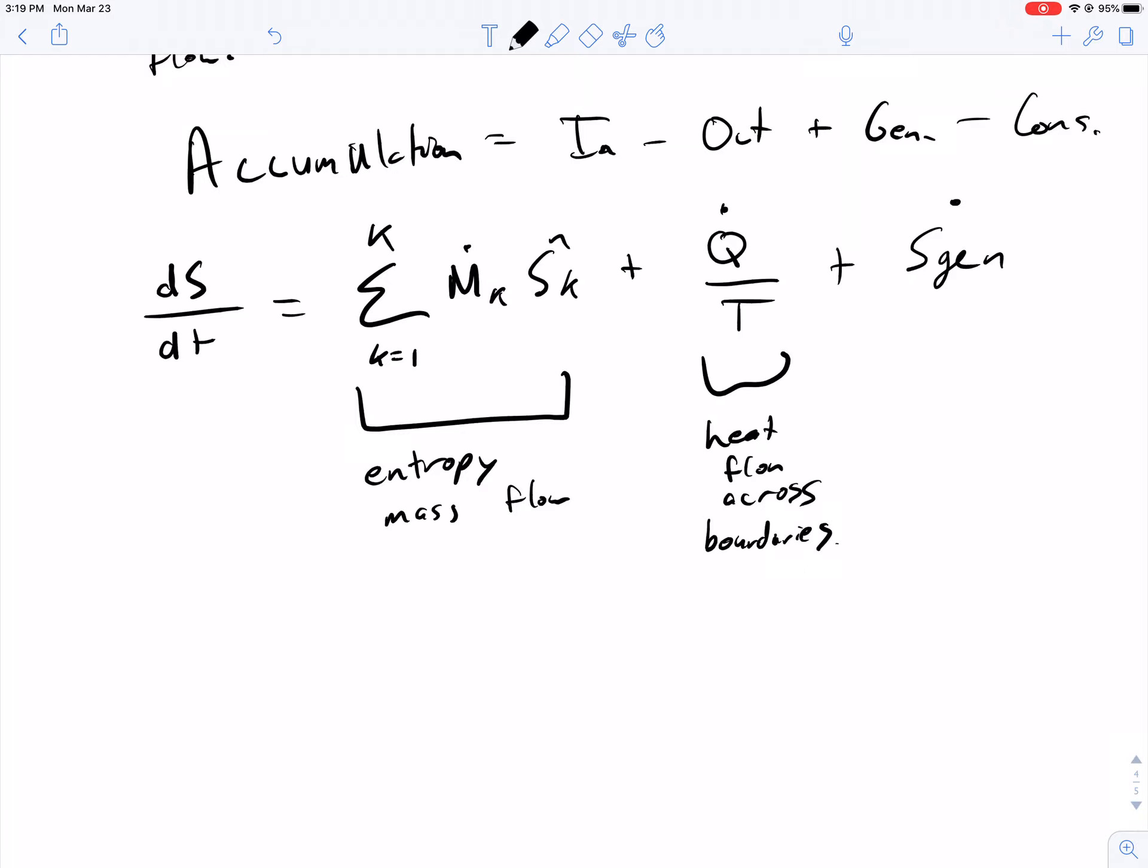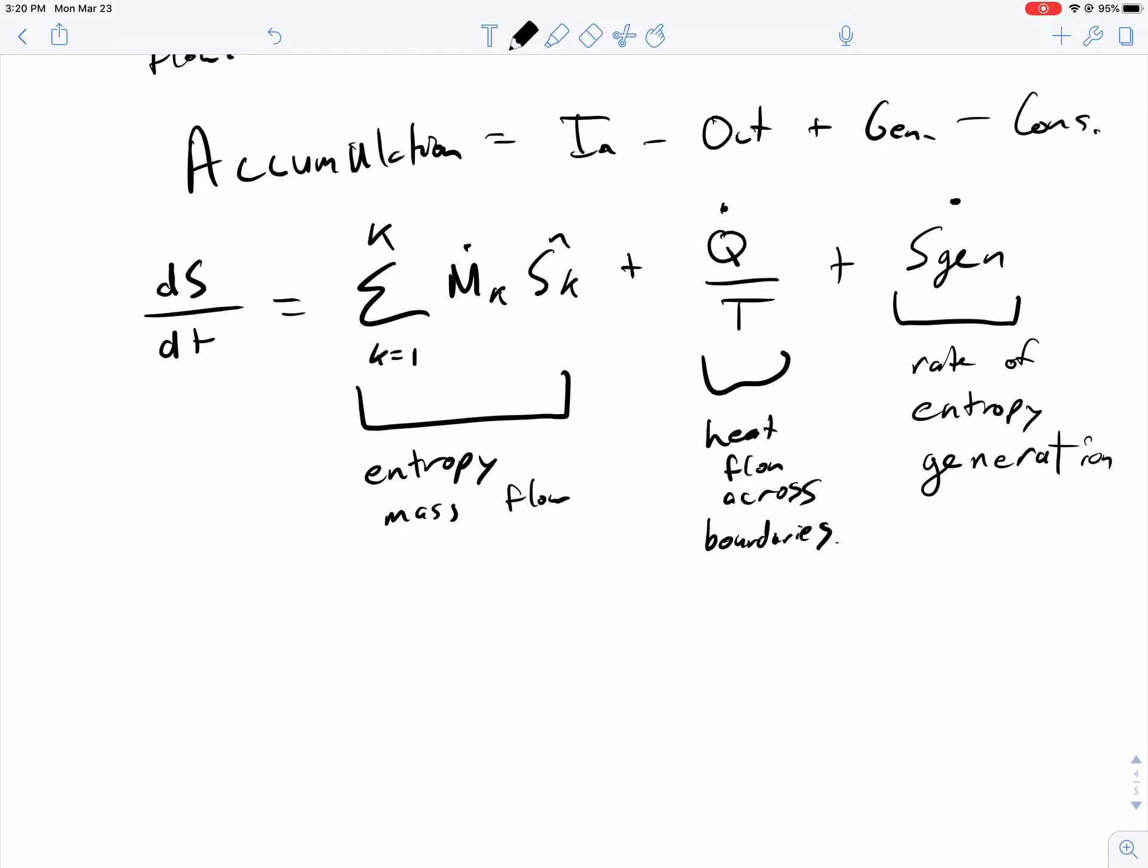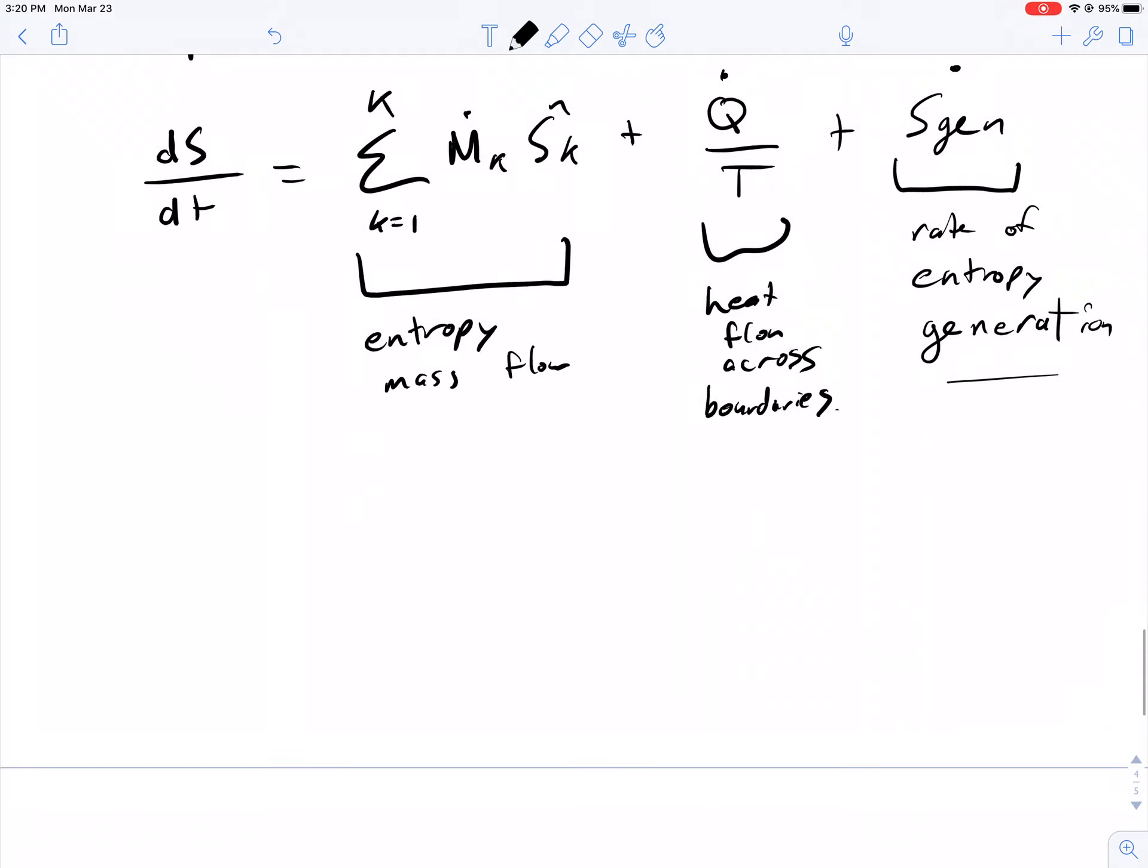The rate of entropy generation from just the increase in disorder—this is just from the disorder that is growing and increasing in your system. And from this, of course, we can cross terms out for different types of systems.